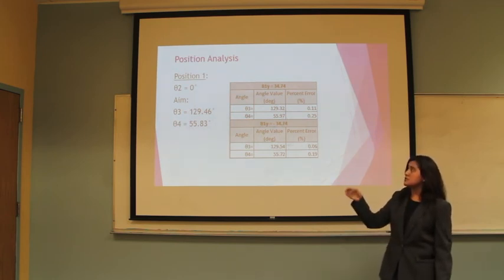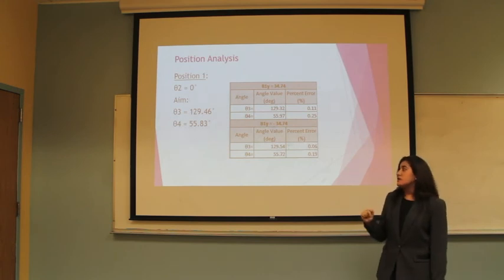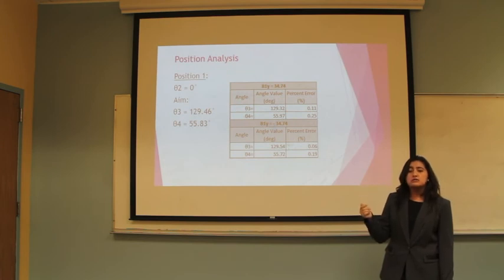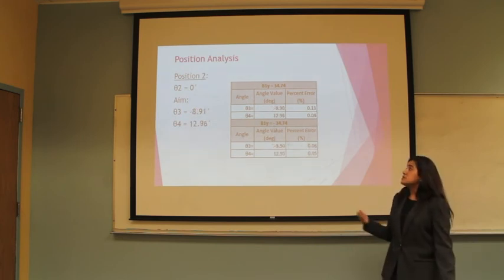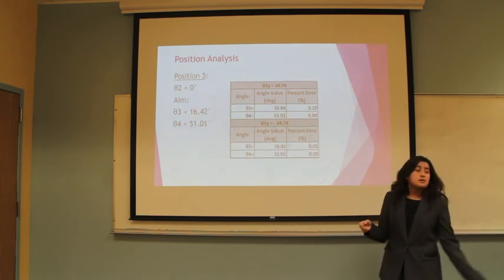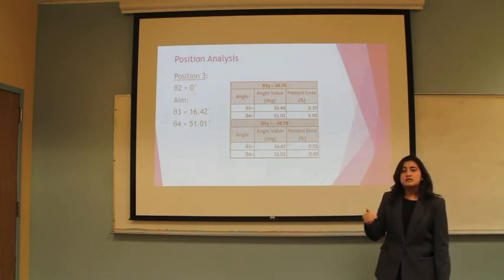As seen here for position 1 with theta 2 equal to 0, we found that our angles given by the y coordinate 34 and the new y coordinate negative 34 had errors that were less than 1%. Actually, our new assumption had even less of an error, which was exactly what we wanted. This is depicted in position 2 as well and position 3 as well. All these percentages were less error than the beginning that we started with.